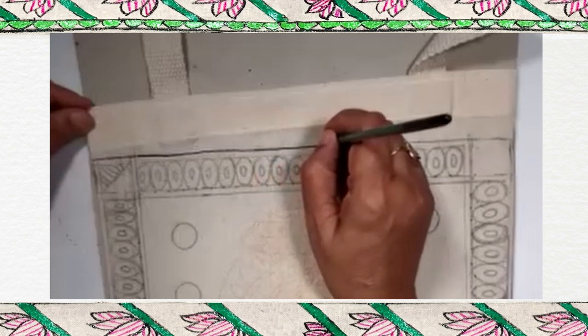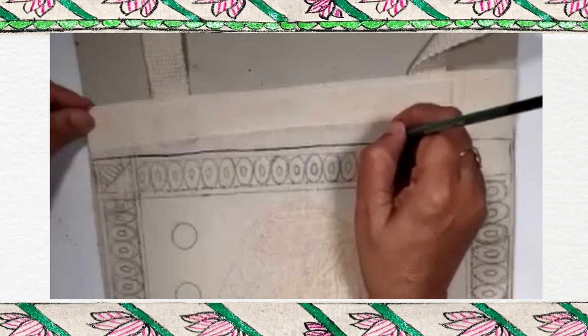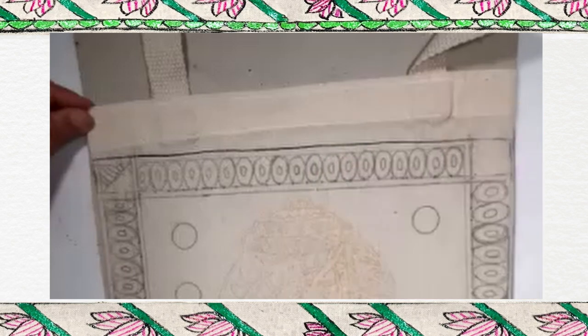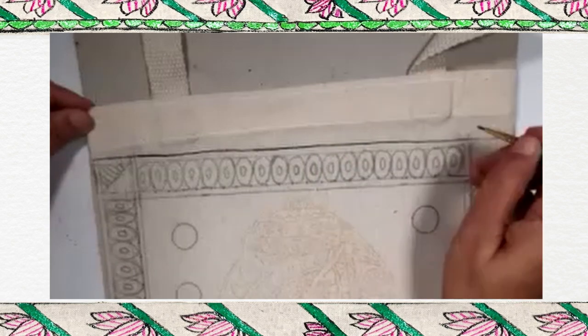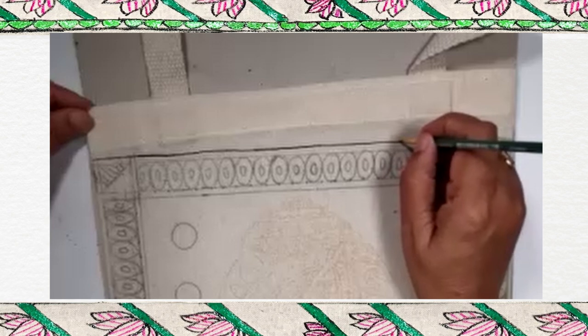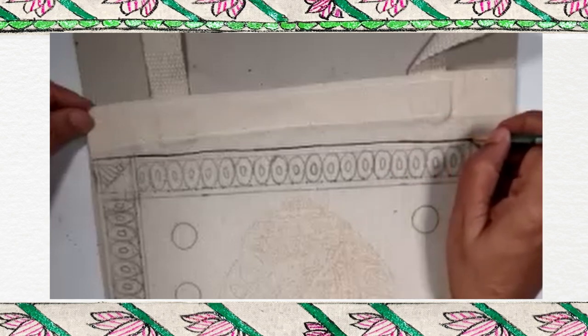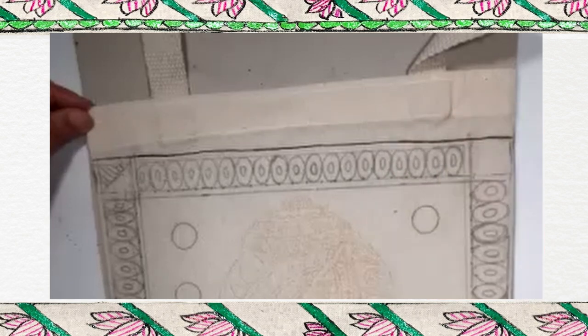And other paints which I am going to use are fabric grills. They are tried and tested, nothing will happen if we will wash the bag. When we want to draw a thin line, we have to keep our brush vertical. For thick line, we have to keep our brush horizontal.